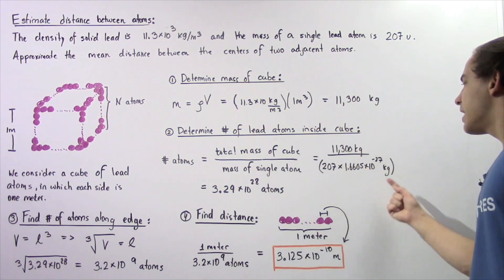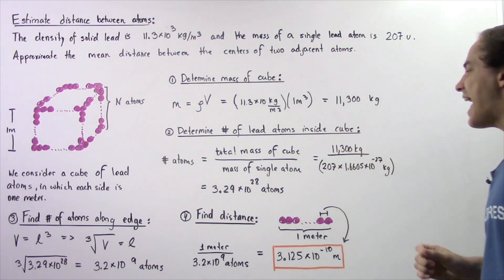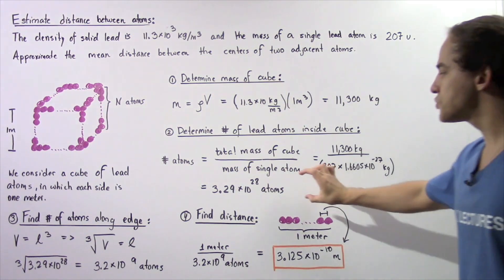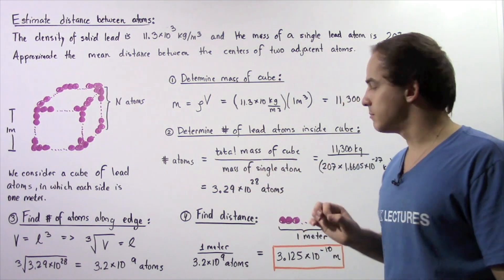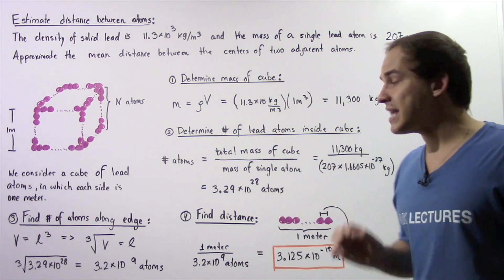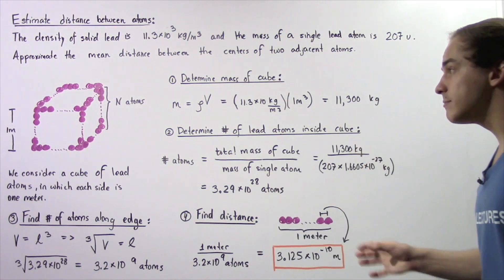So we have 11,300 kilograms, the total mass divided by the mass of a single lead atom in kilograms. And we get approximately 3.29 times 10 to the 28 atoms, lead atoms found in this volume of lead.